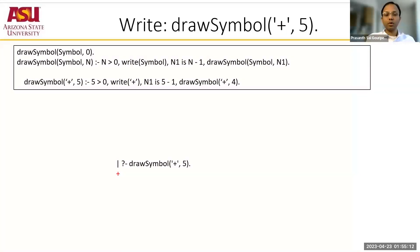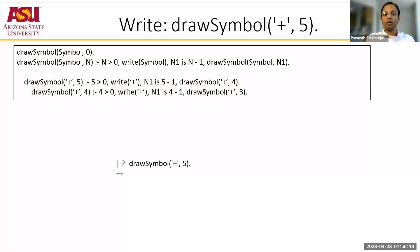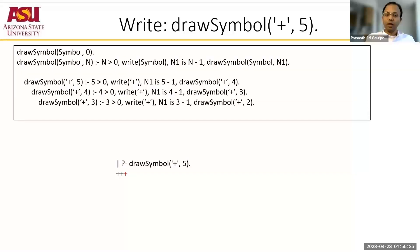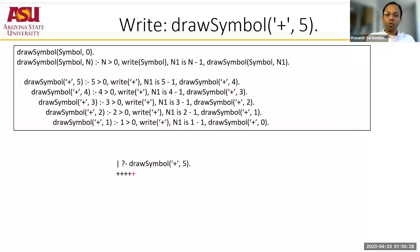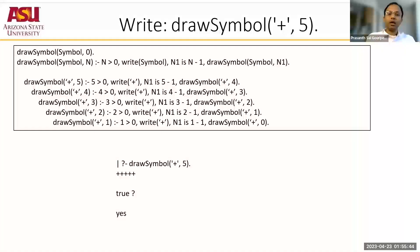So the program would run this way. First, it would call draw_symbol with 5 and output a plus. Then it would do 5 minus 1, which leads to 4 and you get your second plus. Then it again calls it with 3, 2, 1, and then 0. When it reaches 0, it executes the base case draw_symbol(symbol, 0), which does nothing and says yes and ends the program. Remember that the base case is very important for you to terminate the program.